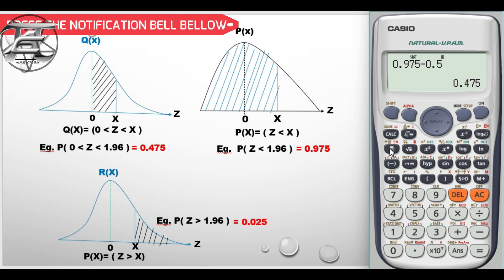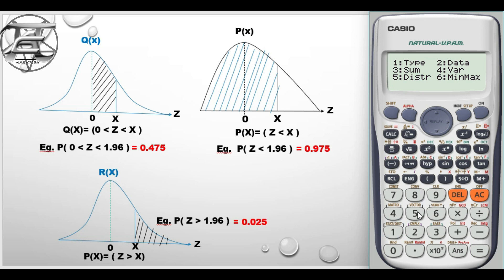Now the last one which is the R(x), this represents values of z greater than x. So we pick the example given to us. Let me key inside the value 1.96, then hit the equal sign and our answer is 0.024998.